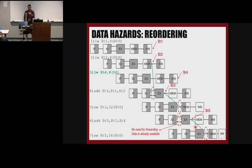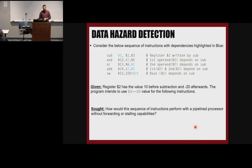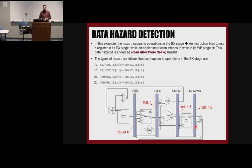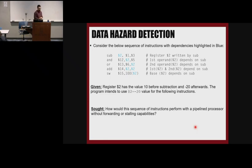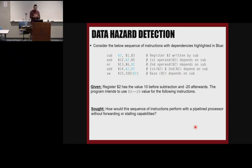Later in this module we're going to get more complex questions — floating point instructions, more stalls. But this is just the beginning. Now let's have another example: a sequence of instructions. The reason for this example is that we're going to use it to explain different concepts — hazard detection and so on.